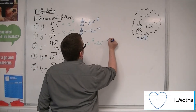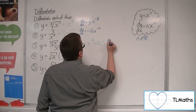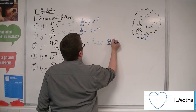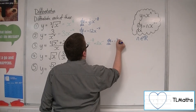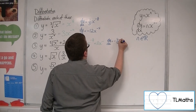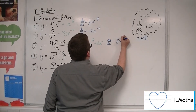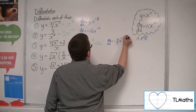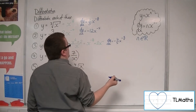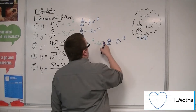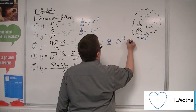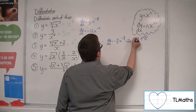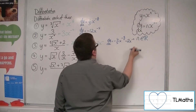dy/dx: the minus four fifths comes down to the front, take one off the power, so minus nine fifths. Then the minus one comes down to the front, and take one off the power, giving minus two x to the minus two.